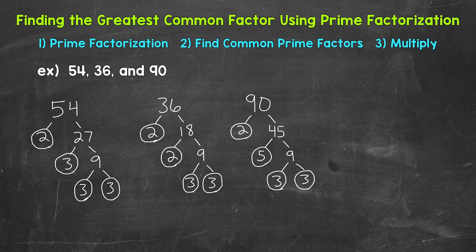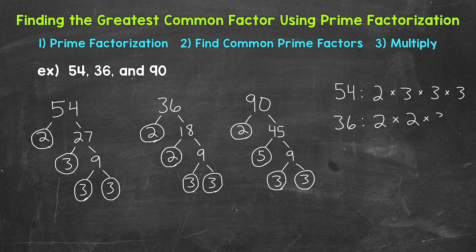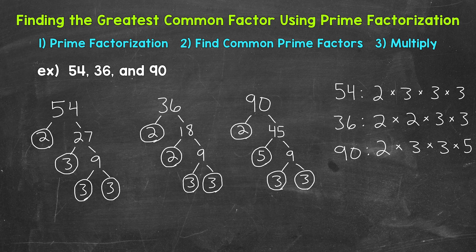Now that we have the prime factorization of all three numbers, we need to look for common prime factors — prime factors that all three numbers share. To make it easier, I'm going to list the prime factors off to the side. For 54: 2, 3, 3, and 3 — 2 times 3 times 3 times 3 equals 54. For 36: 2, 2, 3, and 3 — 2 times 2 times 3 times 3 equals 36. For 90: 2, 3, 3, and 5 — 2 times 3 times 3 times 5 equals 90.